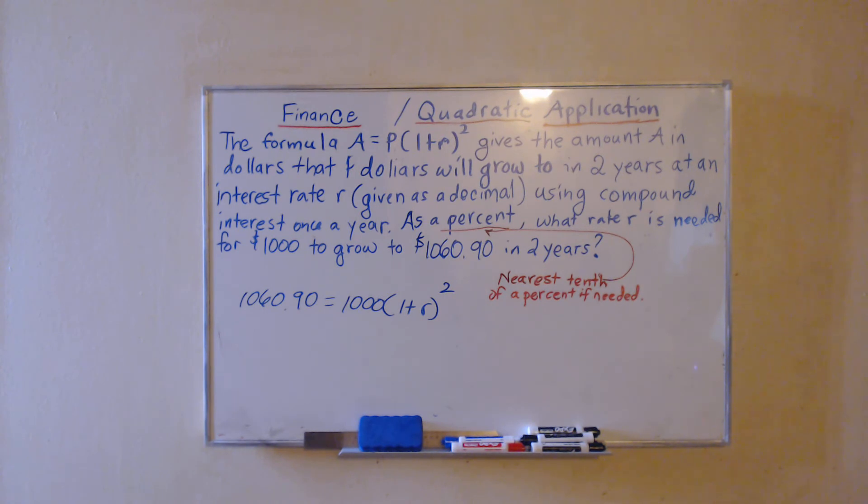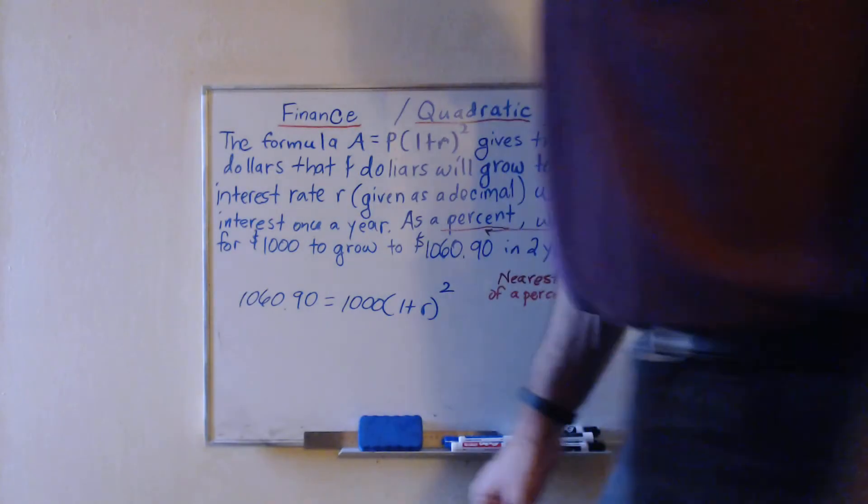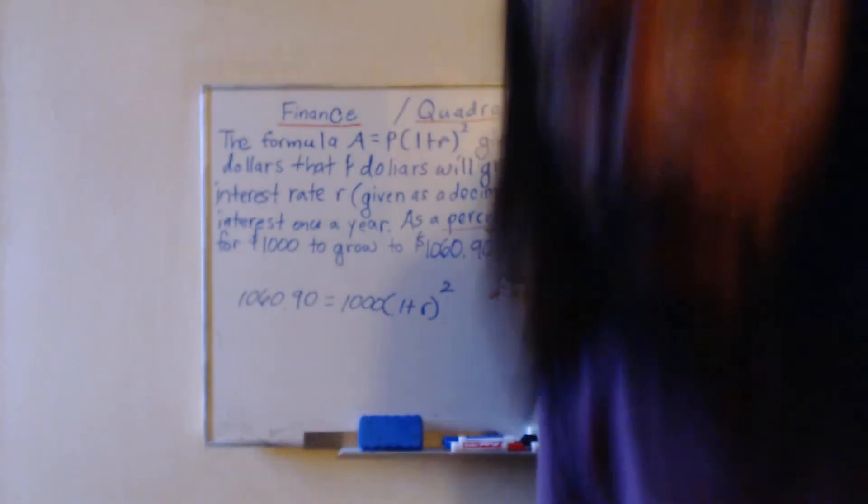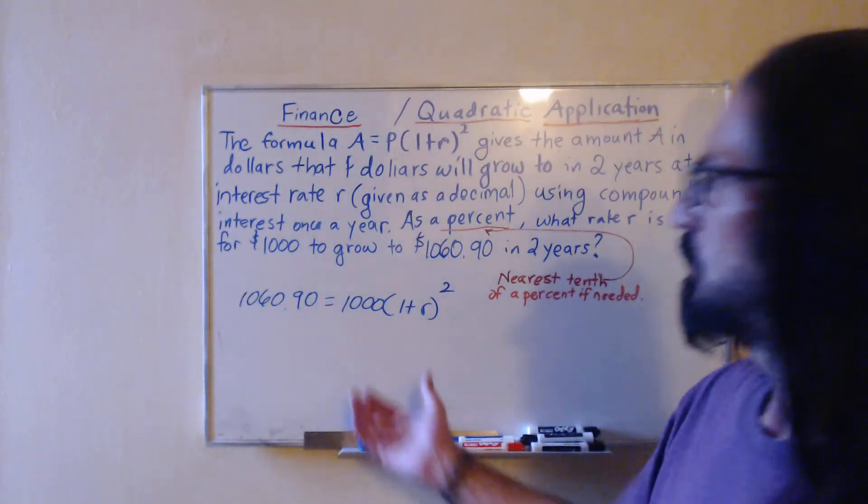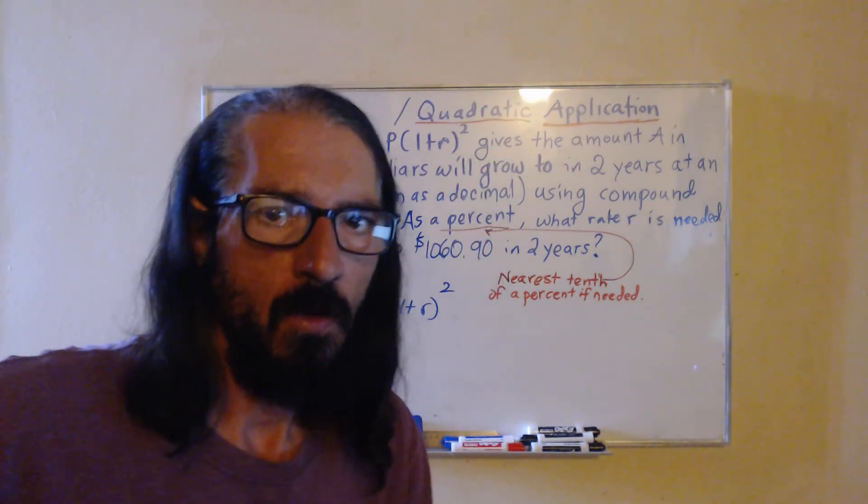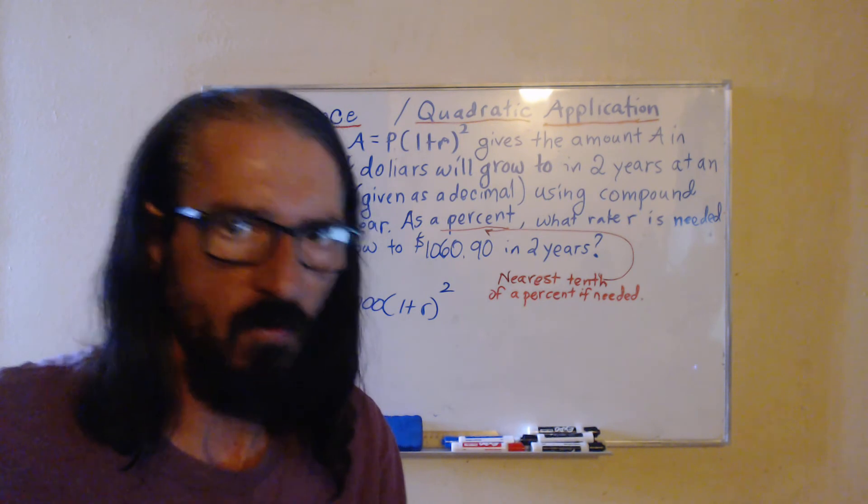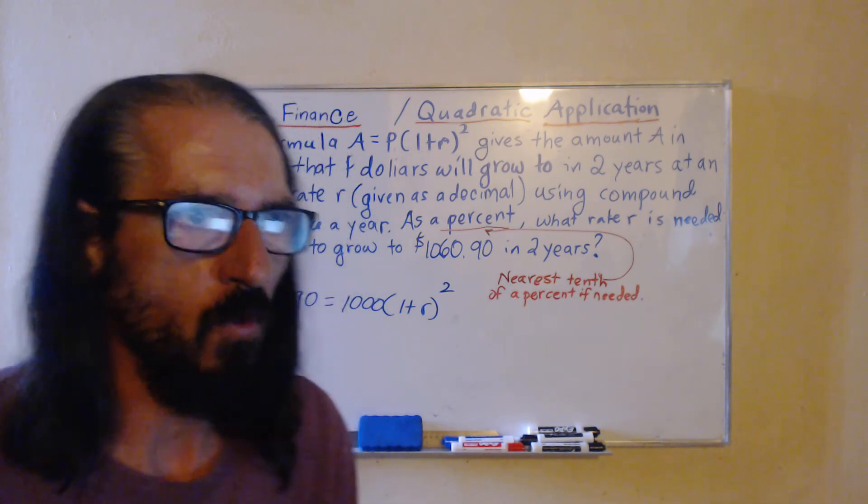Given the fact that r is in one place as part of something that is squared, I think it makes most sense to isolate that and apply the square root property rather than use any other of the methods we've used to solve quadratic equations.